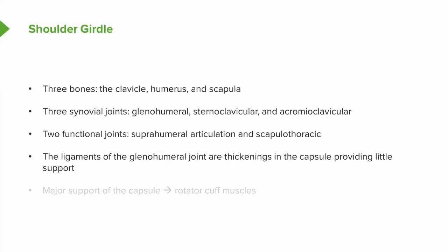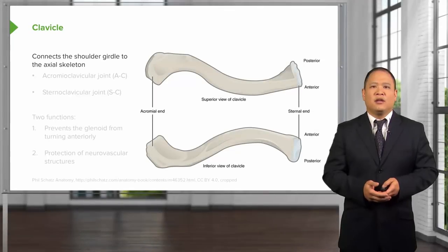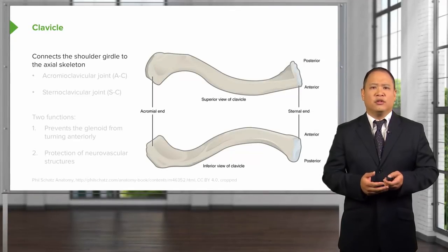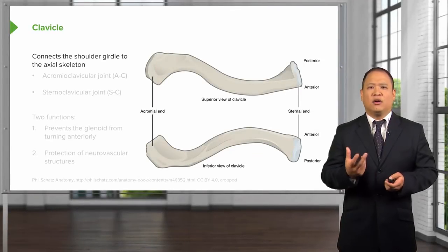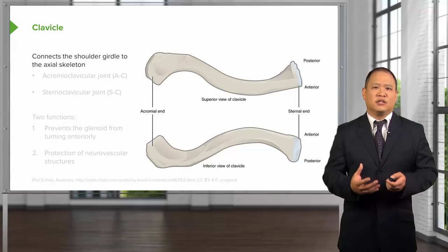There are ligaments of the glenohumeral joint that thicken into a capsule to try to provide support and keep the articulation between the head of the humerus and the glenohumeral fossa more secure. The major support of the capsule comes from the rotator cuff muscles. The clavicle is an important bone because it is the only bone that really stabilizes the shoulder to the midline skeleton.